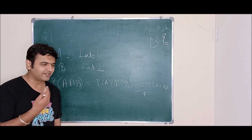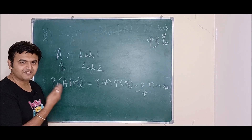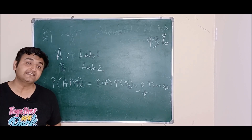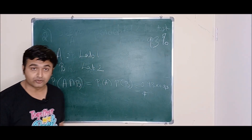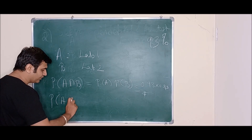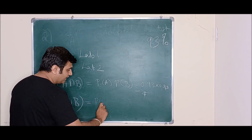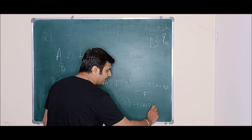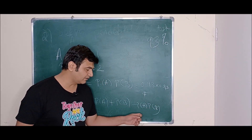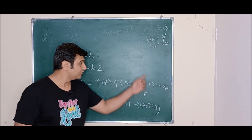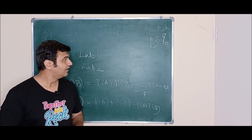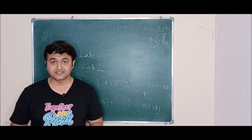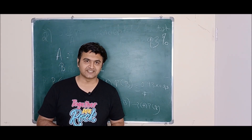One can also modify the question: what is the probability that at least one lab gives a positive report? In that case we want P(A ∪ B) = P(A) + P(B) − P(A ∩ B). Since A and B are independent, P(A ∩ B) = P(A)·P(B), so substitute the values to get the answer. I hope the concept of independent events is clear. If you have any doubts, ask in the comment section. Don't forget to like, share, and subscribe!